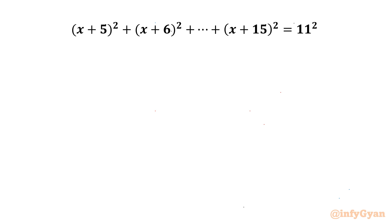Welcome back to Infigr, my dear friends. In today's video we have another very interesting question from algebra: (x+5)² + (x+6)² + (x+7)² up to (x+15)² = 11². We have to find out the possible x values. I will share two different approaches to solve this question.